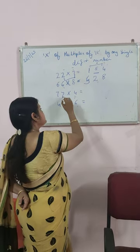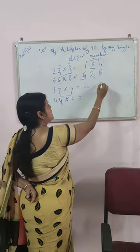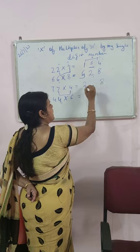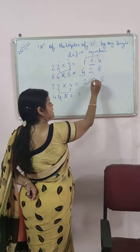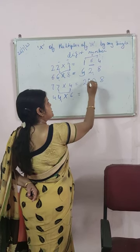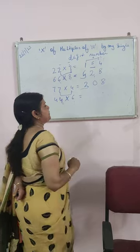Next example: 4 sevens are 28. We write 2 and 8. Add both the digits, we get 10. 0 is here and 1 is carried over, so 3 is here.